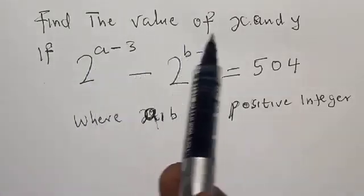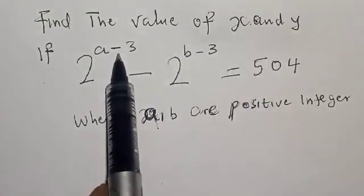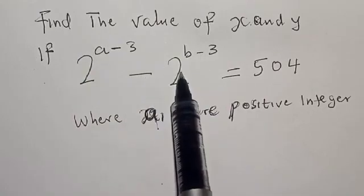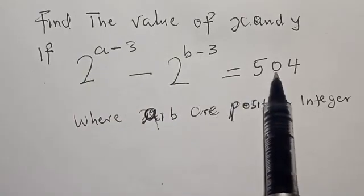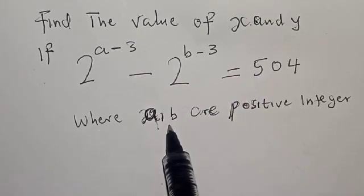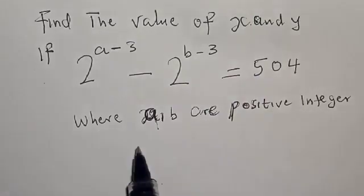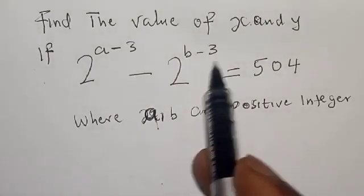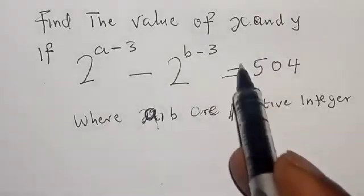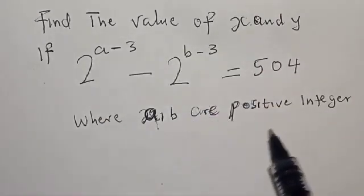Find the value of a and b if 2 raised to power a minus 3 minus 2 raised to power b minus 3 is equal to 5/4, where a and b are positive integers. Hi everyone, welcome to my class. In today's class we want to find the value of a and b from this given equation where a and b are positive integers.